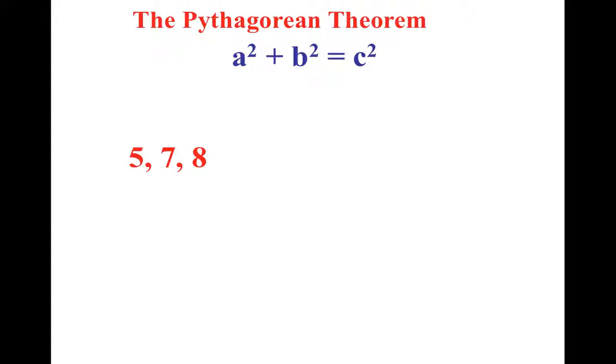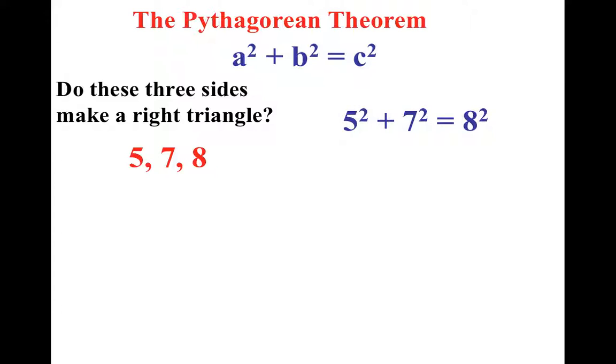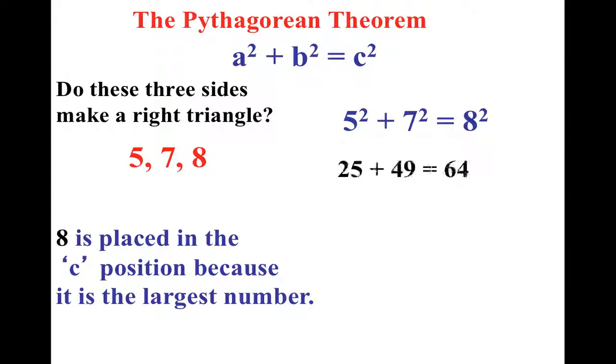All right. So what if I gave you three numbers and I asked you, do these three sides make a perfect right triangle? Well, that would work if when you square them, you get the exact same number. But notice in this situation, I don't. I get 74 equals 64. That's not true. So this is just not a right triangle. And remember, the 8 is the largest number, so it has to go in the hypotenuse spot.